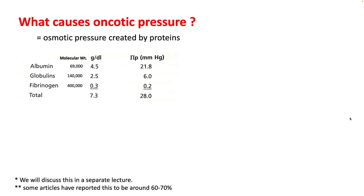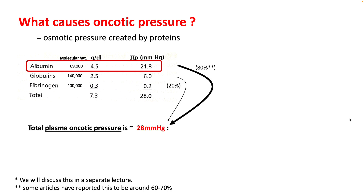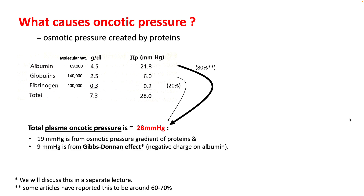Oncotic pressure is the osmotic pressure created by proteins. There are three proteins in the plasma: albumin, globulins, and fibrinogen. Albumin is the smallest molecule and is present in the highest concentration, so it contributes the highest to your total plasma oncotic pressure, which is about 28 mmHg. Out of 28, 9 mmHg is from an effect called the Gibbs-Donnan effect, which happens because of charges on these protein molecules. We'll talk about this effect in a different lecture.